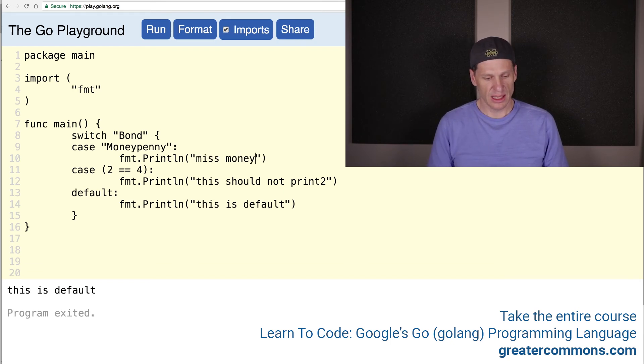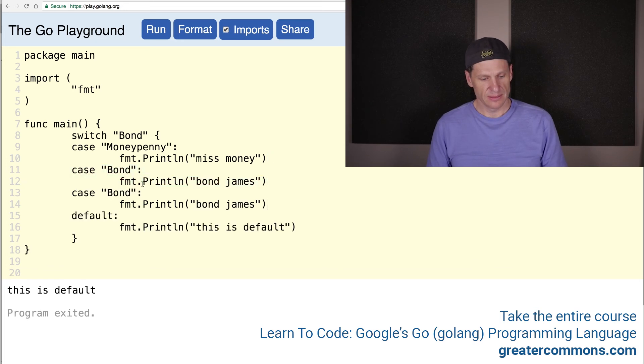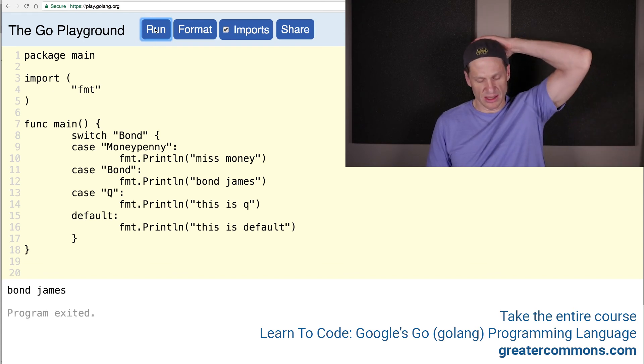And there's some money. And we'll put bond. And needs to be capital. And we could have Q. Format or run. Bond, James Bond. All right. So that's switching on that.